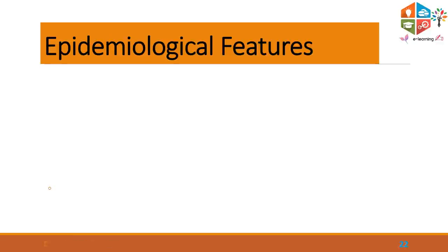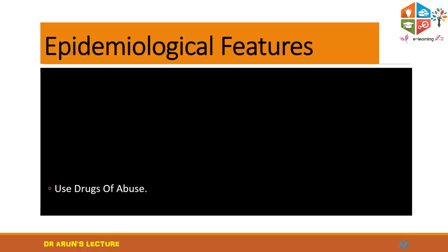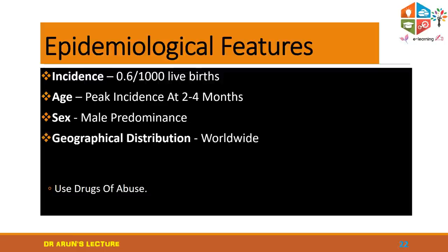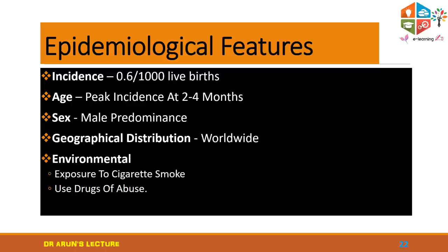Regarding epidemiological features: the incidence is 0.6 per thousand live births. The predominant age group is two to four months after birth, which is the highly vulnerable group. Males are predominantly affected compared to female newborns. Geographically it is worldwide with no exact epicenter for SIDS. Environmental factors include exposure to cigarette smoke or drug abuse during pregnancy or after birth, which increases the likelihood of SIDS.